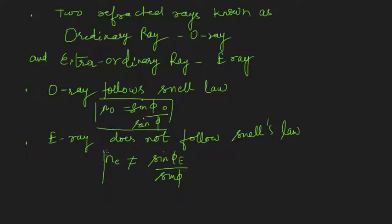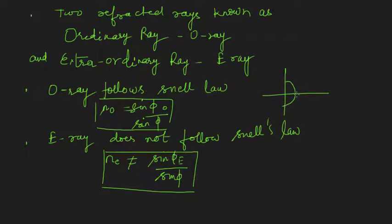Another important property: the O-ray travels with the same velocity in all directions, so its wavefront is spherical. The E-ray travels with different velocities in different directions, giving it a non-spherical wavefront. We will talk about O-ray and E-ray in more detail a little later.